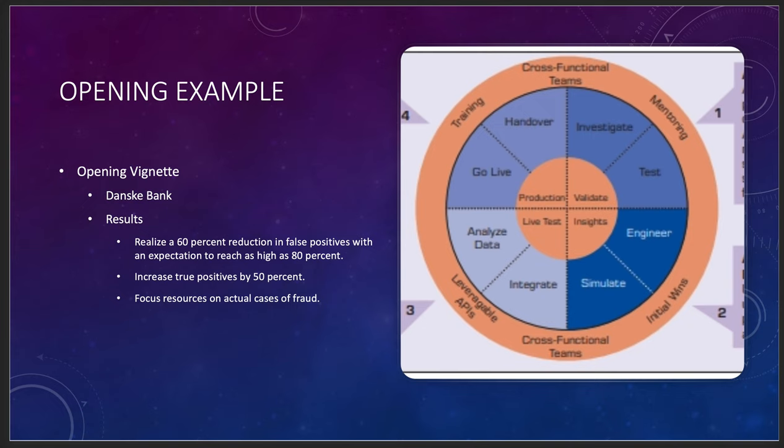One of the things that is really interesting with how they did all of their neural networking and artificial intelligence and machine learning was that they're able to realize a 60 percent reduction in false positives with an expectation to reach as high as 80 percent and increase true positives by 50 percent. By focusing on resources for actual cases of fraud, they are able to work out exactly how fraud was happening in terms of how the bank worked. If you can reduce your false positives and increase your true positives by 50 percent, you're going to catch more fraud.